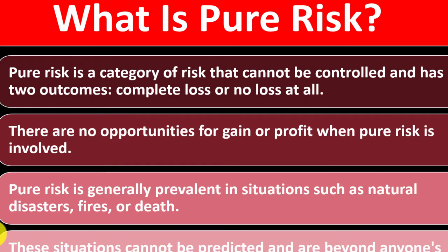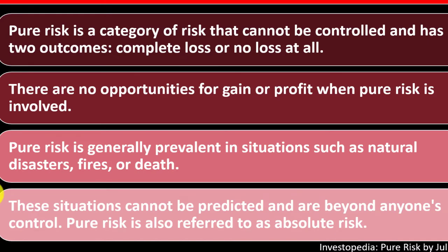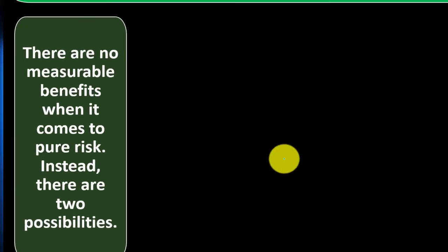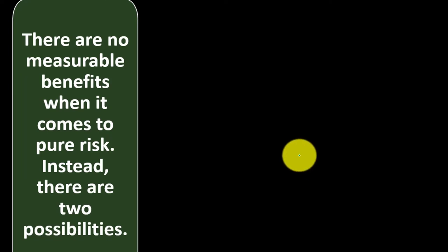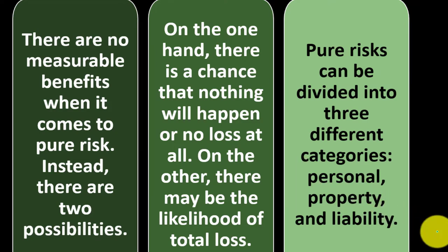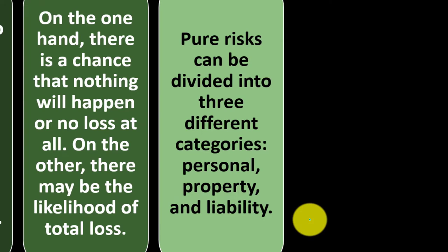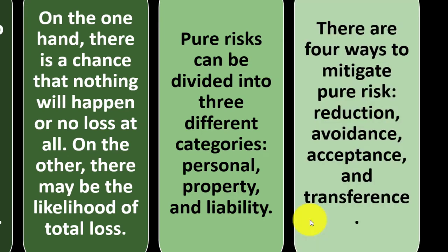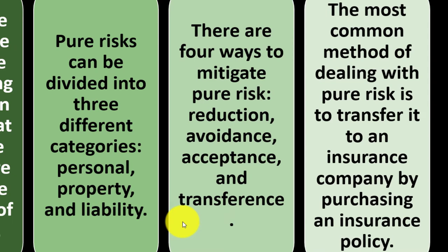Pure risk situations cannot be predicted and are beyond anyone's control. Pure risk is also referred to as absolute risk. There are no measurable benefits — on one hand, nothing happens and there's no loss; on the other, there may be total loss. Pure risk can be divided into three categories: personal, property, and liability. There are four ways to mitigate pure risk: reduction, avoidance, acceptance, and transference. The most common method is to transfer it to an insurance company by purchasing a policy.